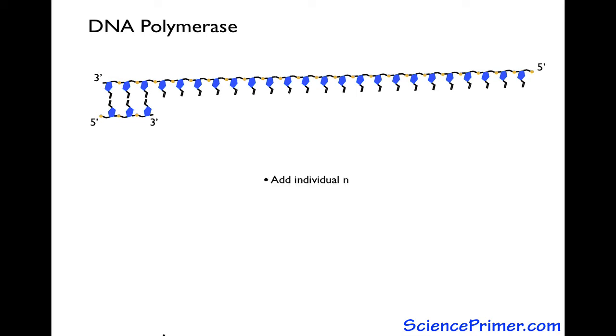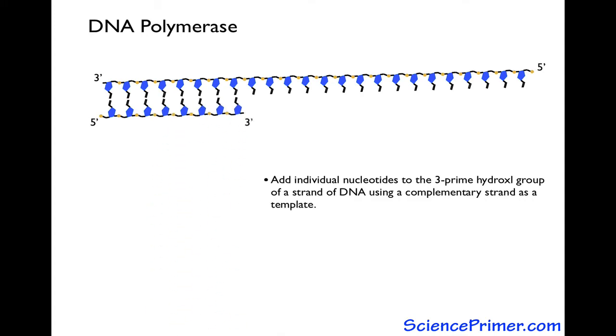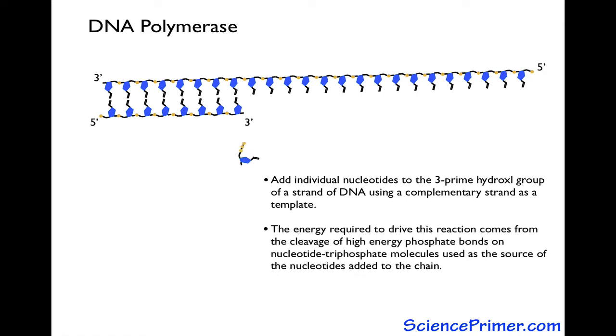They create double-stranded DNA by adding individual nucleotides to the 3' hydroxyl group of strands of DNA using a complementary strand as a template. The energy required to drive this reaction comes from the cleavage of high-energy phosphate bonds on nucleotide triphosphate molecules used as the source of the nucleotides added to the chain.